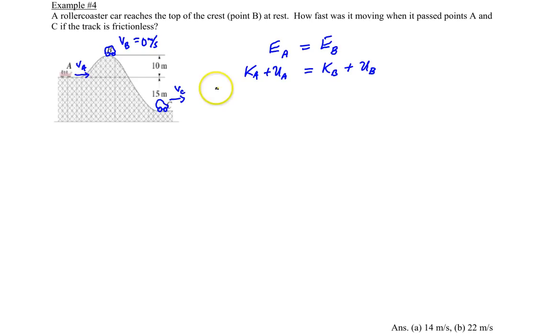So starting at A we have kinetic energy, one-half mvA squared, plus the potential energy mghA equals the kinetic energy it has at B, one-half mvB squared, plus the potential energy it has at B.